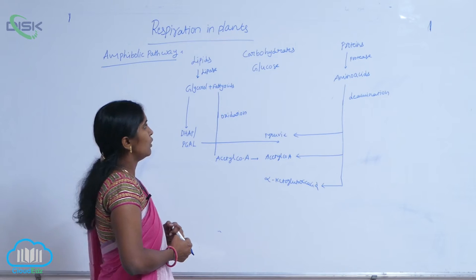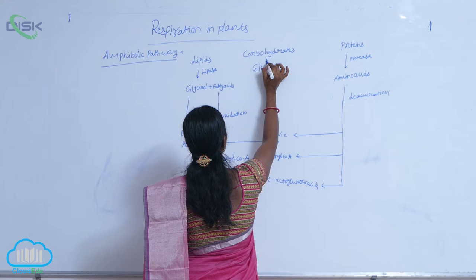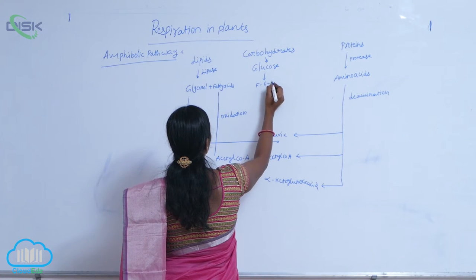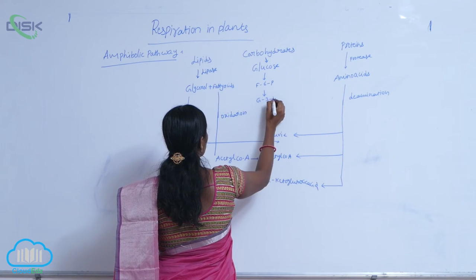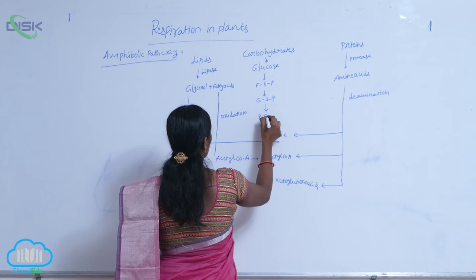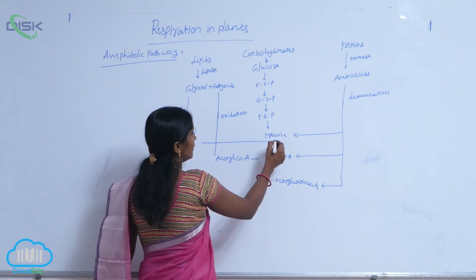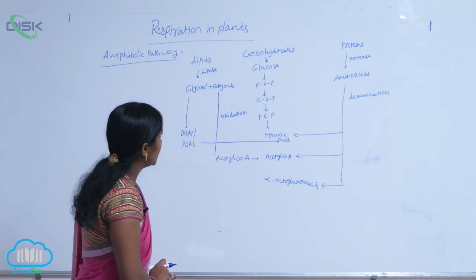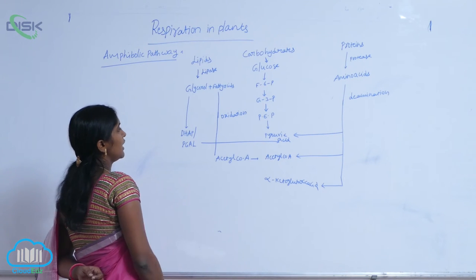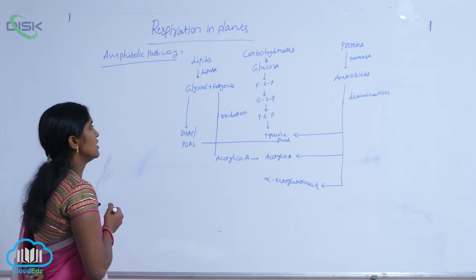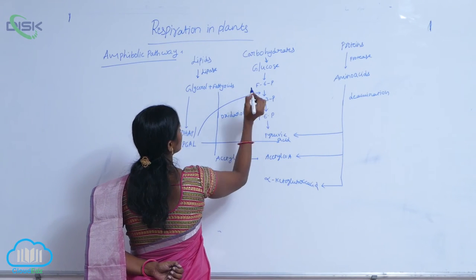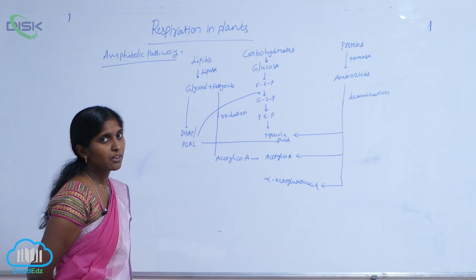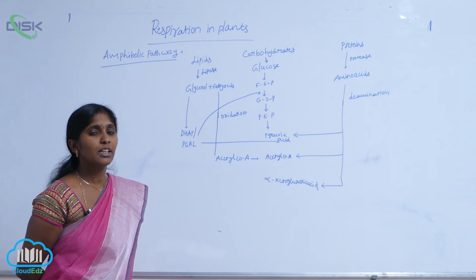Through the carbohydrate pathway, glucose is the first key substrate for respiration. The sequence goes: glucose → fructose-6-phosphate → glyceraldehyde-3-phosphate → PEP (phosphoenolpyruvic acid) → pyruvic acid. At the fructose-6-phosphate level, DHAP from glycerol also enters. The macromolecules are thus converted into simpler forms, which is why respiration is called a catabolic reaction.